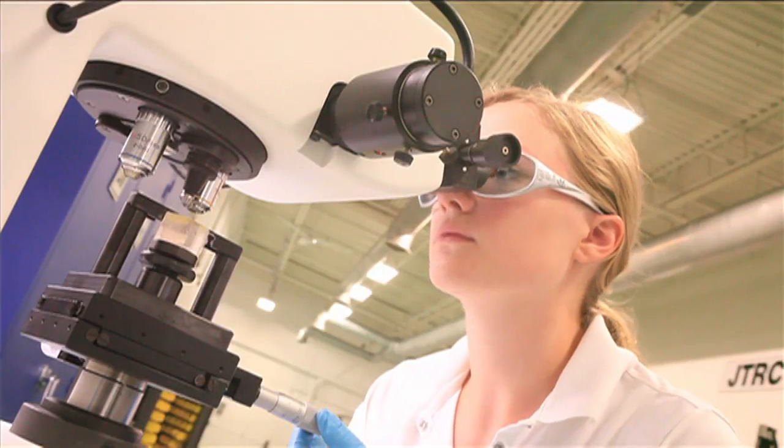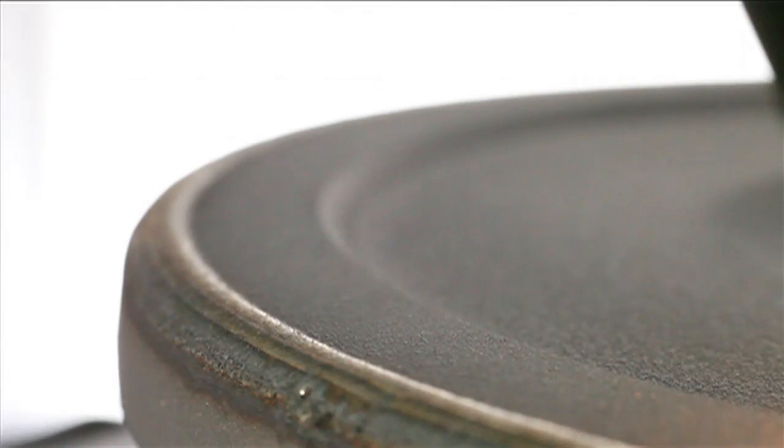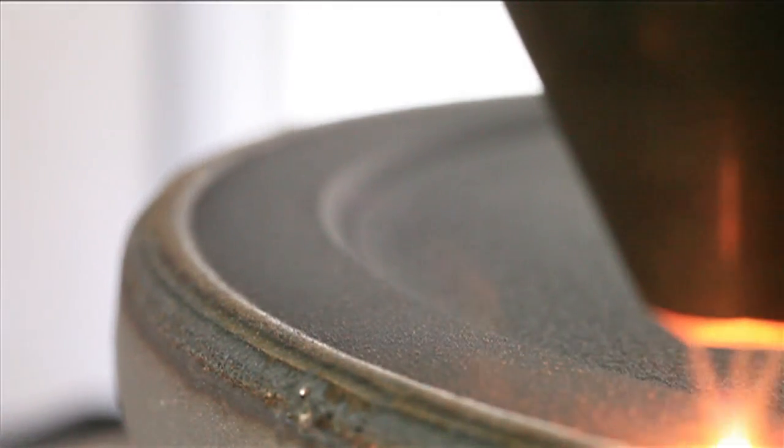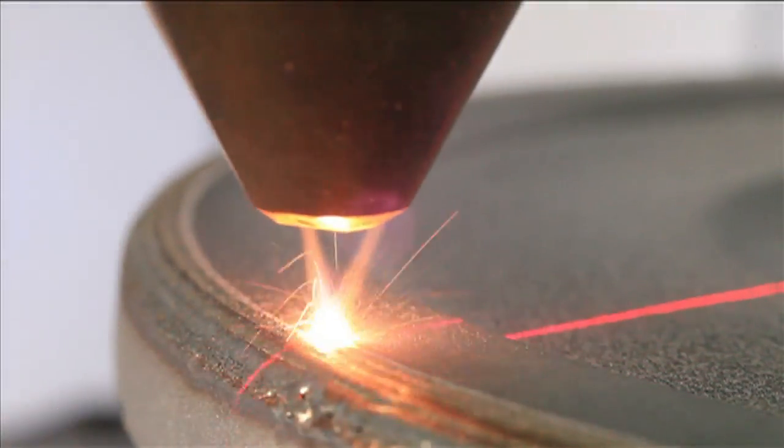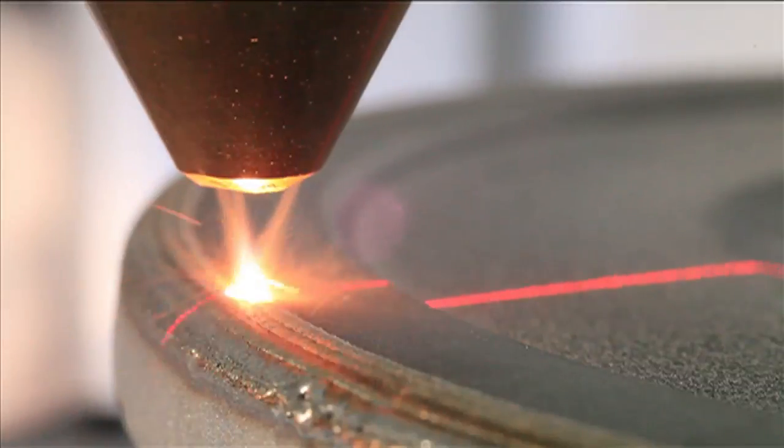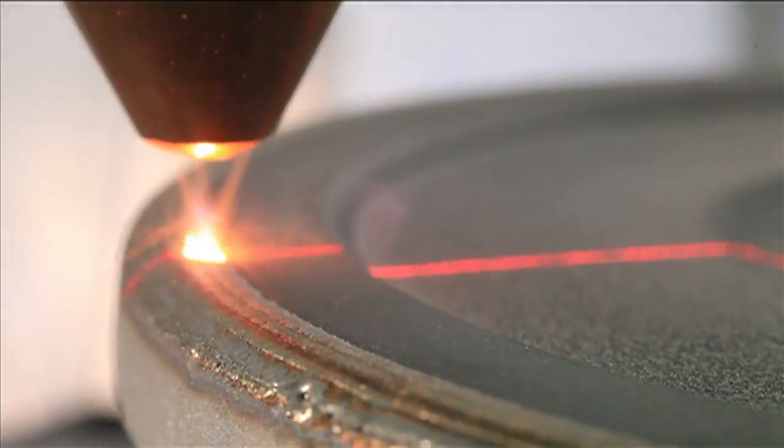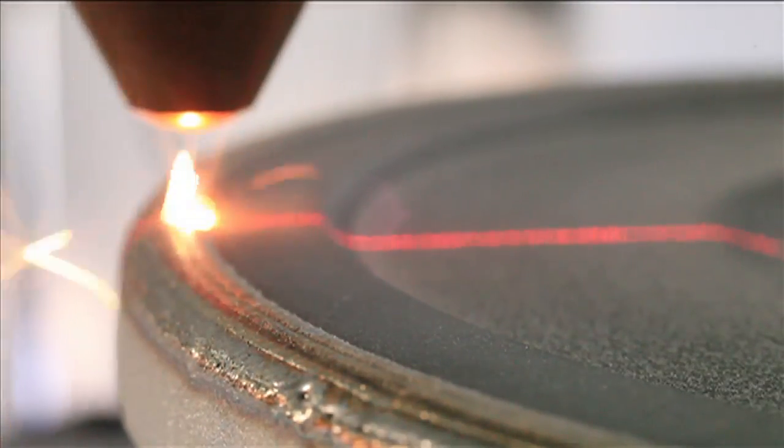This translates to an enhanced grain structure and lower minimum clad thickness required to achieve desired hardness as compared to PTA applied clads. Parametric accuracy of the system allows for clad layers as thin as four thousandths of an inch with maximum clad thicknesses ranging over three inches.